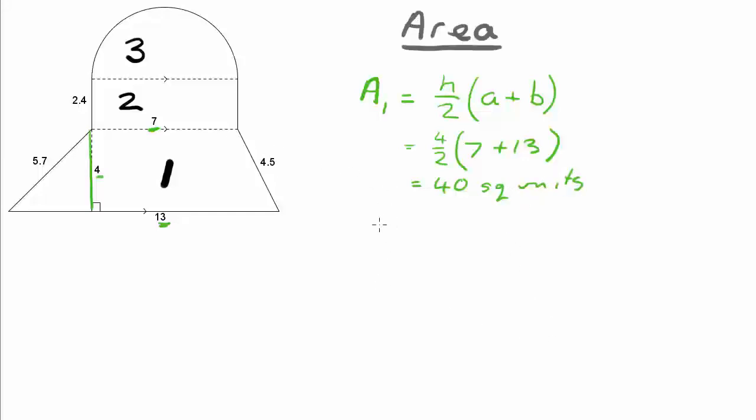Now the second shape is our rectangle, and we know that to calculate the area of a rectangle we multiply the base which is seven by the height which is two point four, so we've got seven multiplied by two point four which is sixteen point eight square units.